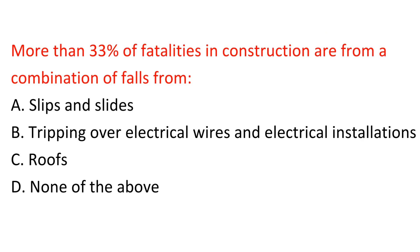Question: More than 33% of fatalities in construction are from a combination of falls from: A. Slips and slides. B. Tripping over electrical wires and electrical installations. C. Roofs. D. None of the above. Answer: C. Roofs.